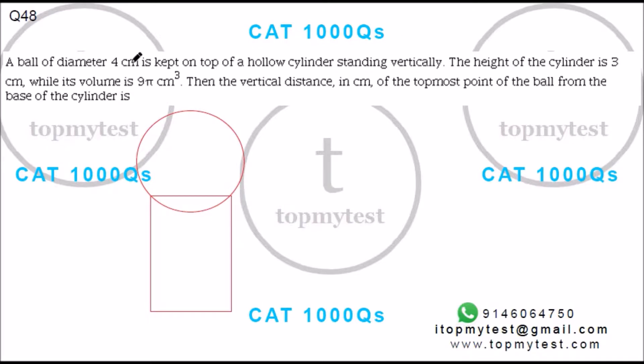This is a question on geometry. A ball of diameter 4 cm is kept on top of a hollow cylinder standing vertically. The height of the cylinder is 3 while its volume is 9π. Then the vertical distance in cm from the topmost position of the ball from the base of the cylinder is how much.